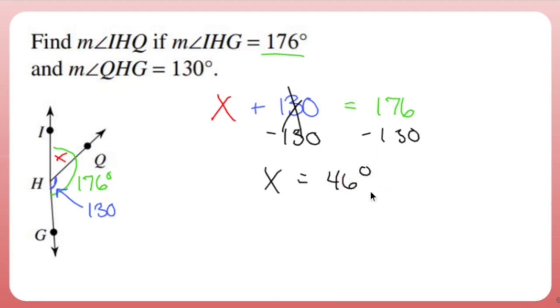Now I'm not going to call it X. I just used X as a variable. So what I'm going to do is go back to the original thing that it asked me to find. The measure of angle IHQ is 46 degrees.